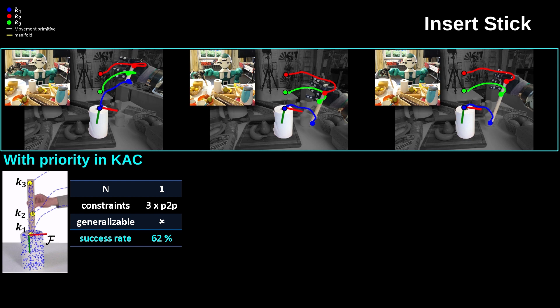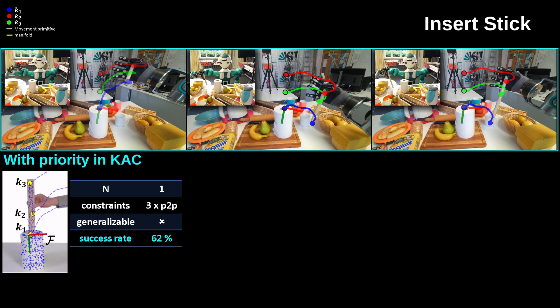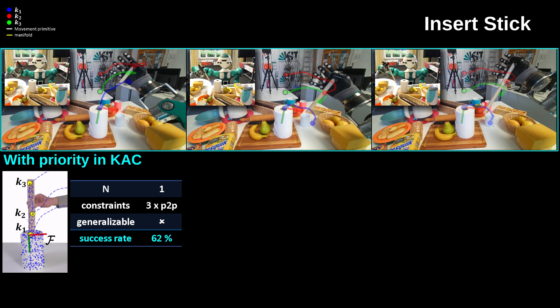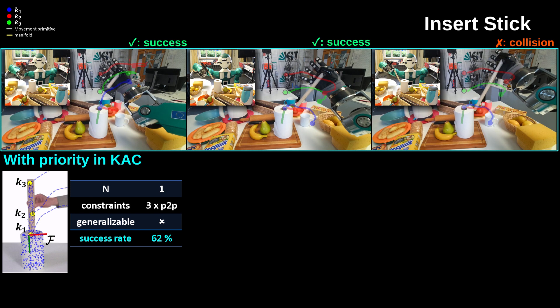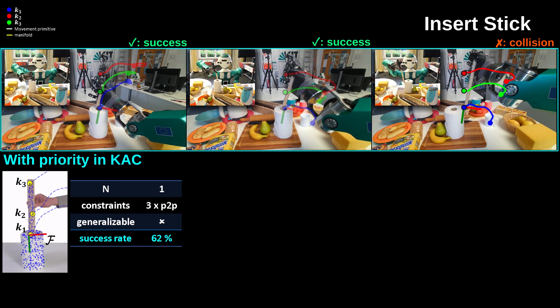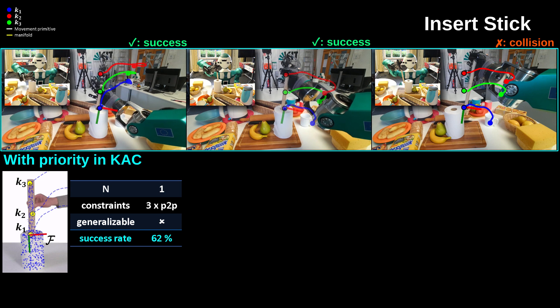We evaluated KIVOS's extrapolation ability in handling large shape variations in the insertion task. Here we demonstrate the case with a short, a long, and an extra-long stick, with a maximum length difference of 30 cm. In a one-shot imitation learning setup, KIVOS learns three point-to-point constraints and adapts the task to a new stick. We see that KIVOS handles the shape variation to some extent and still results in a collision in the extra-long case.